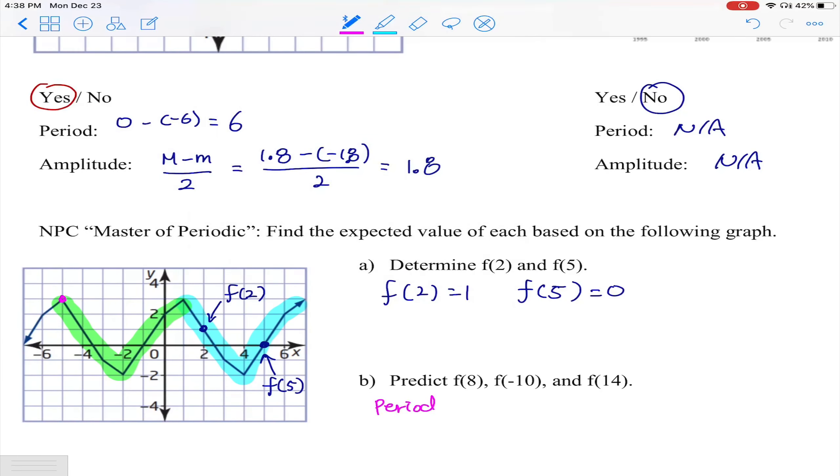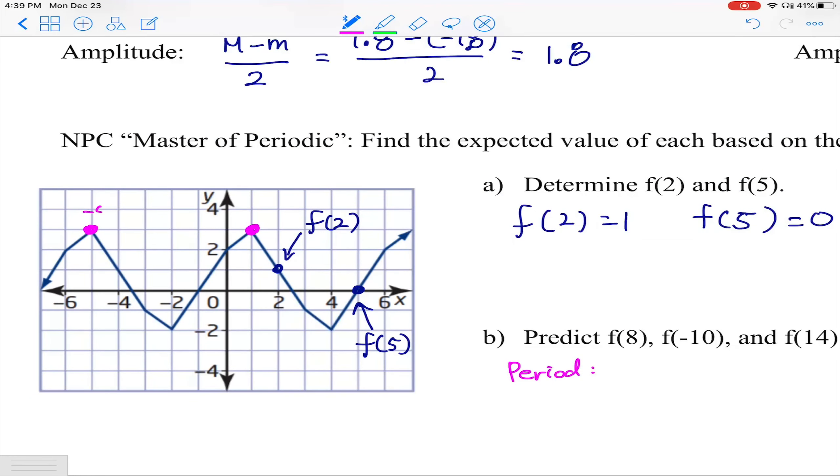For the period in this case, from this point to that point over there, the starting point to ending point - that is negative 5 to positive 1. The ending minus the starting, which is then 6. That means the same value will be repeated after the period of 6. That means f(2) plus 6, which is the period, equals f(8).